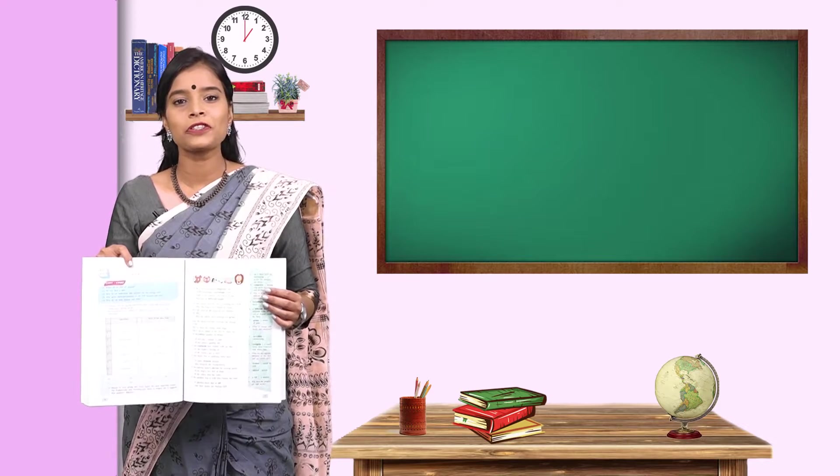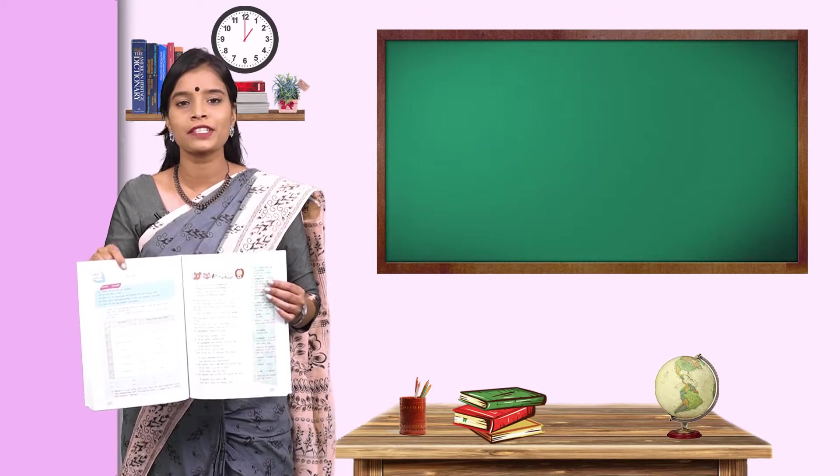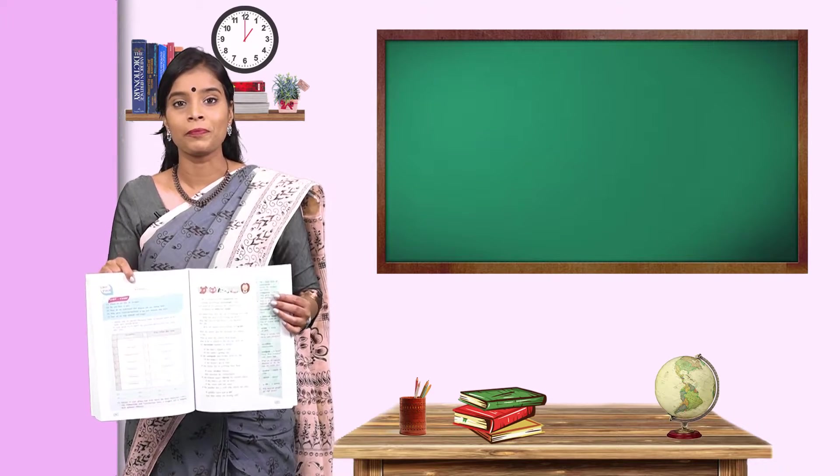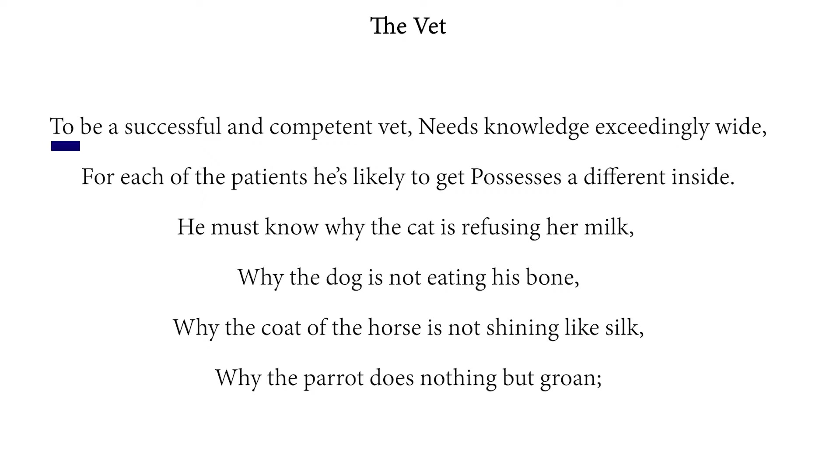So I request you to please open page number 77 of your textbook. I will be reading this poem and I request you to point at the words as I read them. The vet. To be a successful and competent vet needs knowledge exceedingly wide. For each of the patients he is likely to get possesses a different inside. He must know why the cat is refusing her milk. Why the dog is not eating his bone. Why the coat of the horse is not shining like silk. Why the parrot does nothing but groan.